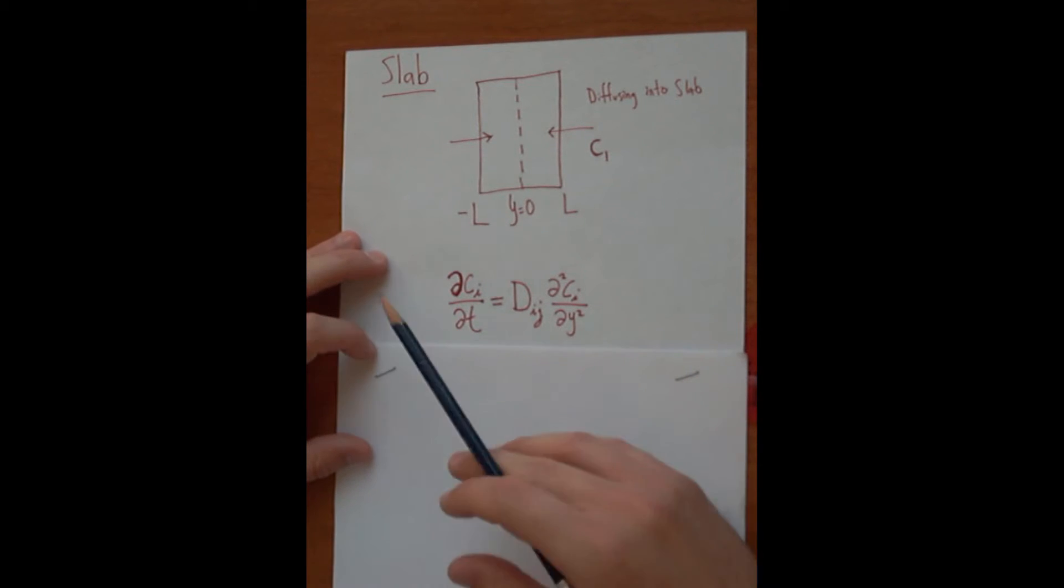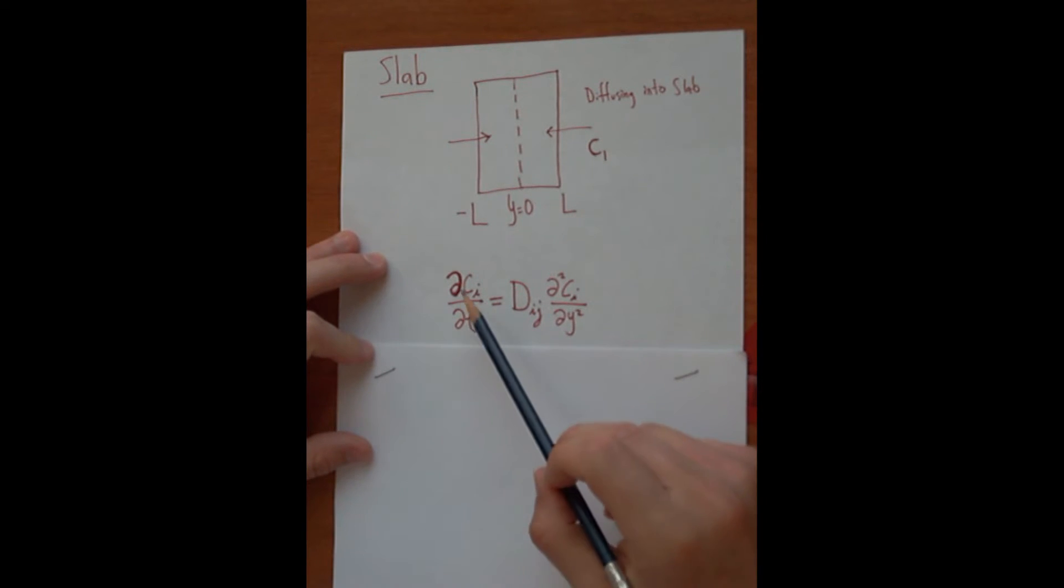This equation here is a partial differential equation because concentration is dependent upon two variables, both time and position. So it's going to be a little bit trickier to solve, but we'll work through that in a little bit. Now that we have our governing equation, to be able to solve these differential equations, we need to set up boundary conditions as well as initial conditions because concentration is also dependent upon time.